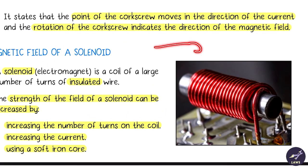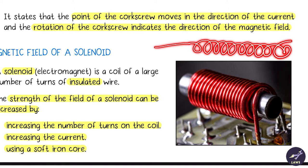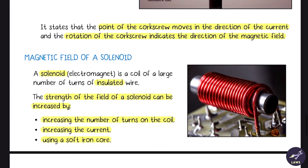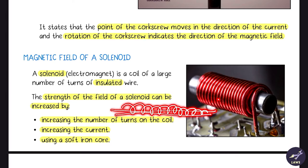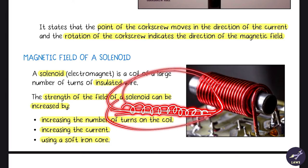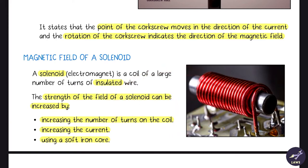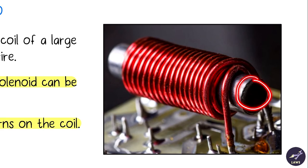The solenoid is basically a wire with a large number of turns and it is insulated. The strength of the solenoid's magnetic field can be increased by: increasing the number of turns, increasing the current, and using a soft iron core.